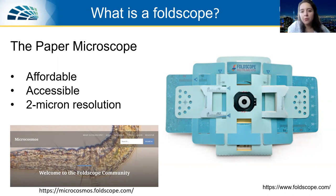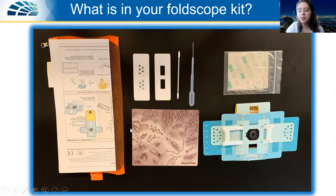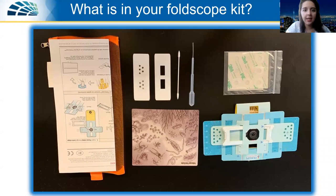When you receive the kit, here's what's in it: you'll have the foldscope with an instruction sheet shown on the left, glass slides, needles, pipettes, and other materials for sample preparation and practice. More information is provided in the instruction paper. You are also welcome to look at different YouTube videos where people explain how to assemble and use the foldscope properly. There are plenty of resources on the Microcosmos website as well.